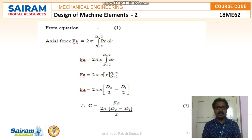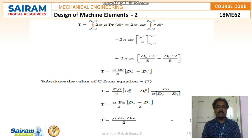Since p*r is constant c, we take it outside: Fa = 2*pi*c * integral from di/2 to do/2 of dr. Integration of dr gives r; applying the limits gives Fa = 2*pi*c * (do/2 - di/2). After simplification: c = Fa / (pi * (do - di) / 2).